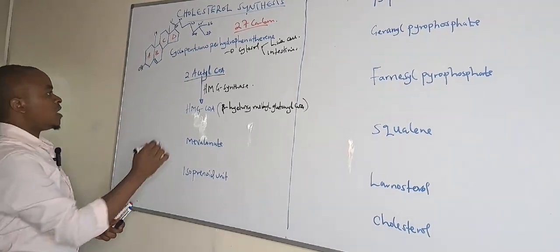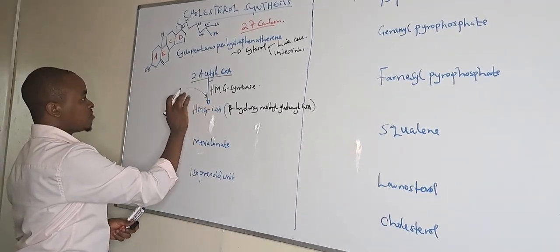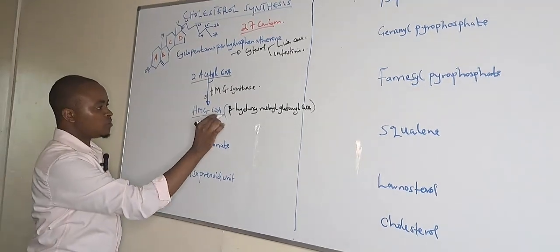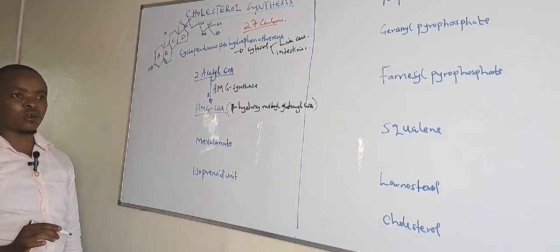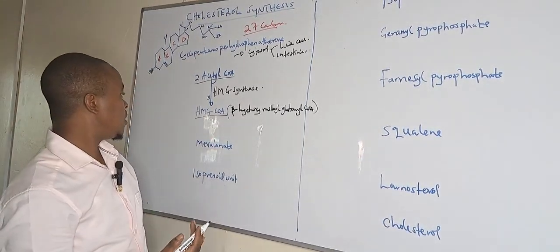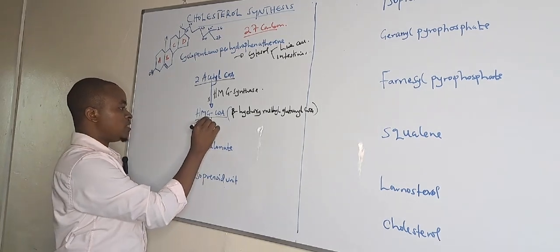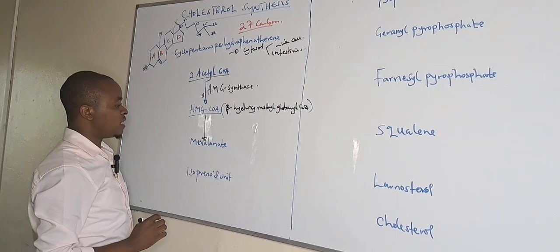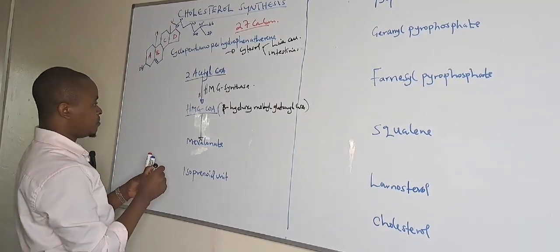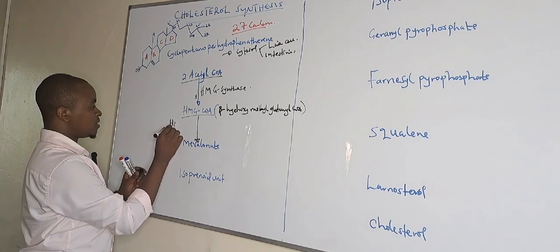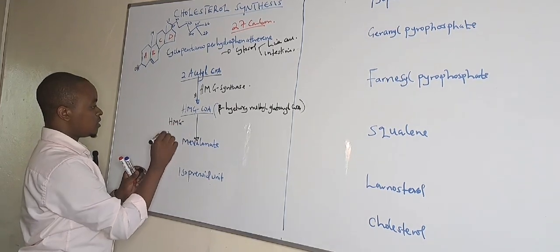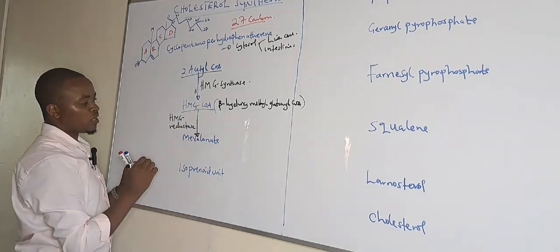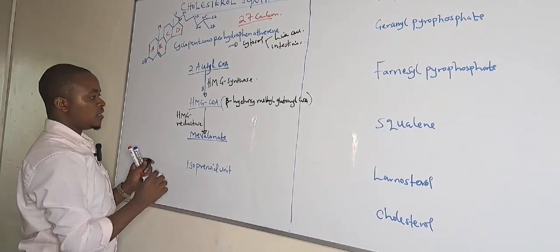HMG-CoA is formed by addition of another acetyl-CoA — that's why we say two molecules. After forming HMG-CoA in the cytosol of the liver cells or intestines, it is converted to mevalonate. To convert to mevalonate, we need an enzyme known as HMG-reductase. HMG-reductase is the enzyme that reduces HMG-CoA to mevalonate.